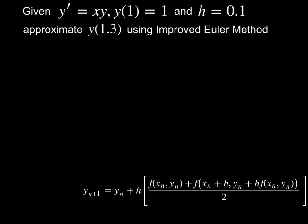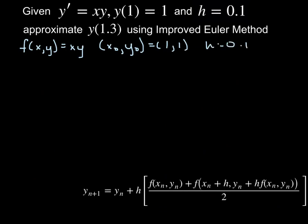In this video I'll work out the same problem we did in the basic Euler method video so you can compare the two methods. Given y prime equals x times y, initial condition 1 comma 1, h equals 0.1, we want to approximate the y value at x equal to 1.3 using the improved Euler method.